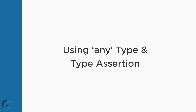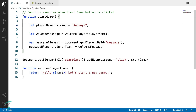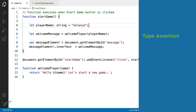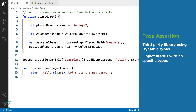Now, let us see what is any type in TypeScript and details about type assertion. Sometimes a few third-party libraries use dynamic types or may have an object literal which doesn't have a specific type. In such cases, we use type assertion to get the correct type.